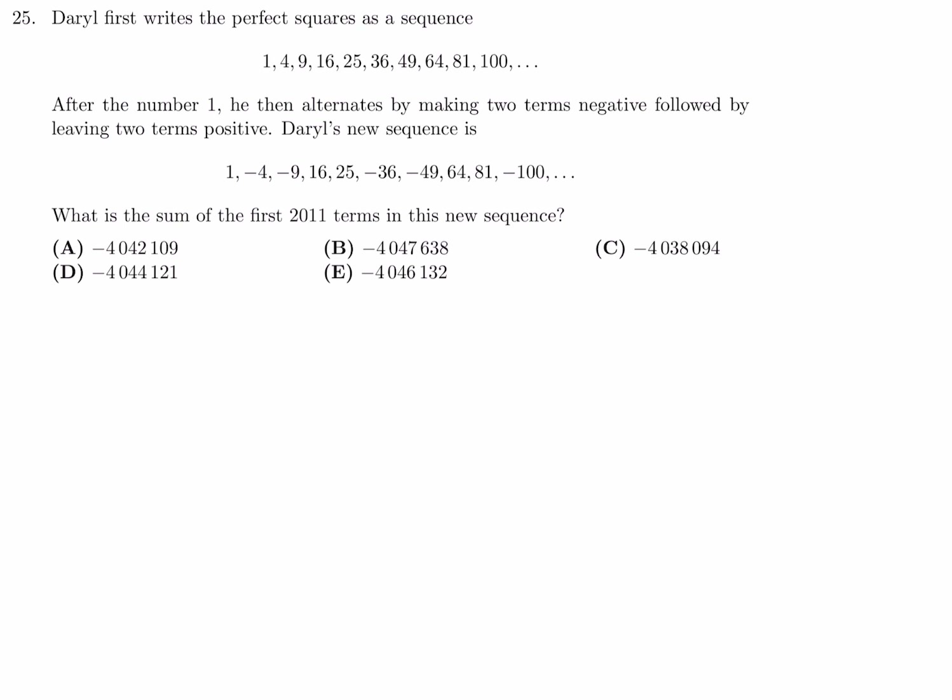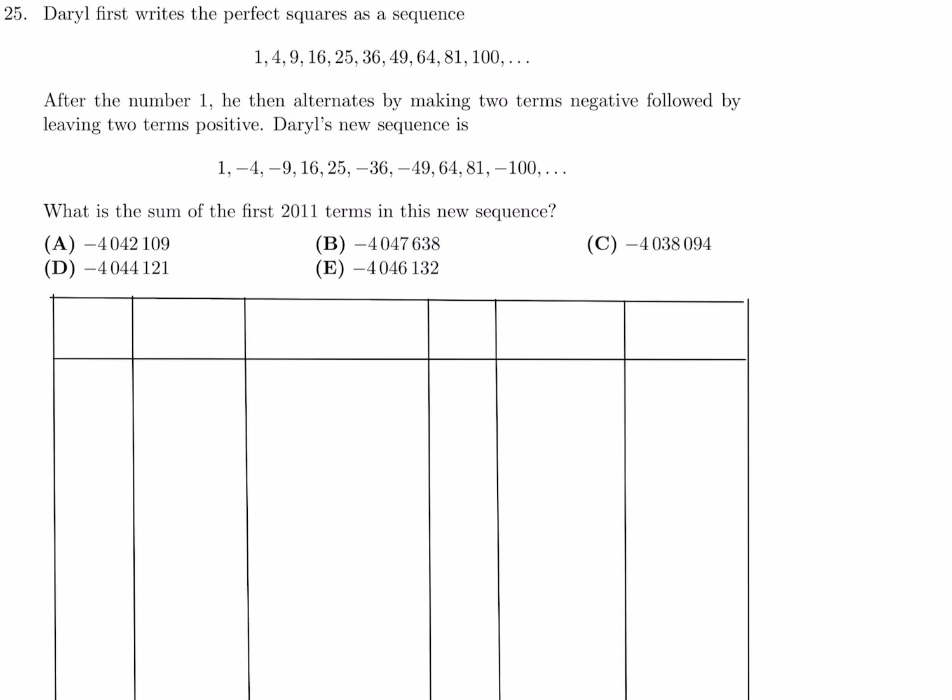Darryl first writes perfect squares as a sequence: 1, 4, 9, 16, 25, 36, 49, 64, 81, 100, and so on. After the number 1, he alternates by making two terms negative, followed by two terms positive. Darryl's new sequence is 1, −4, −9, 16, 25, −36, −49, 64, 81, −100, and so on. What is the sum of the first 2011 terms? Obviously you can't write out 2011 terms — we need to find a pattern.